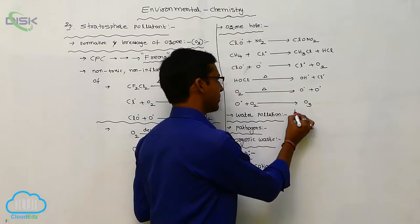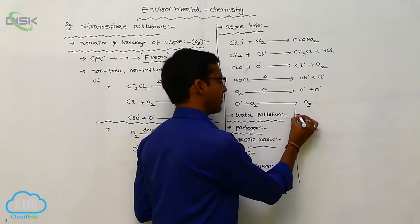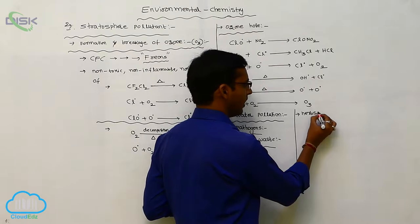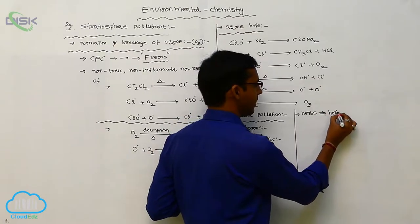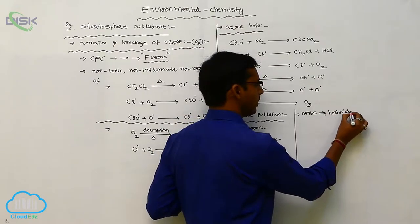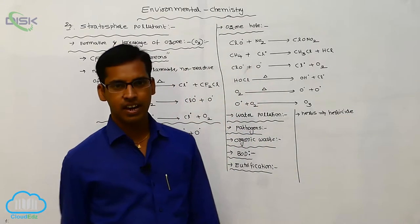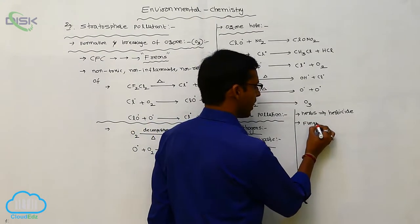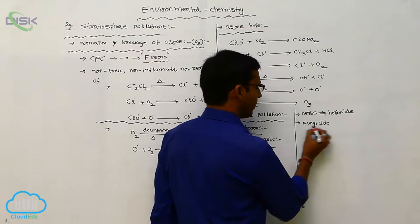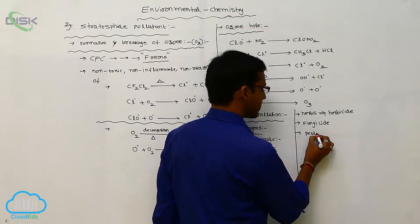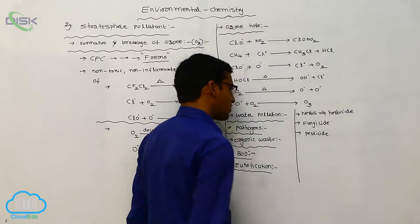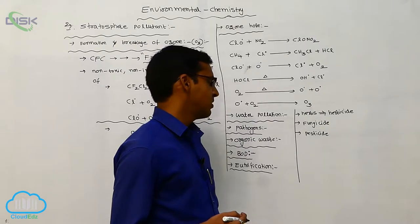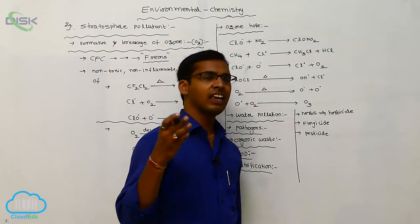The killing of herbs is called herbicide. The killing of fungi species is called fungicide. The killing of pests is called pesticide. Different types of fertilizers, herbicides, fungicides, and pesticides are used for killing microorganisms.